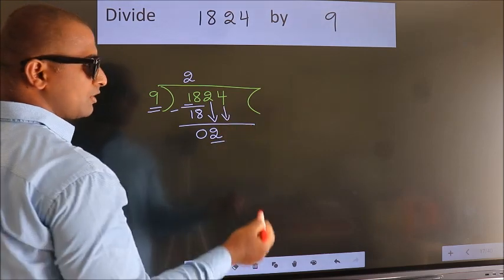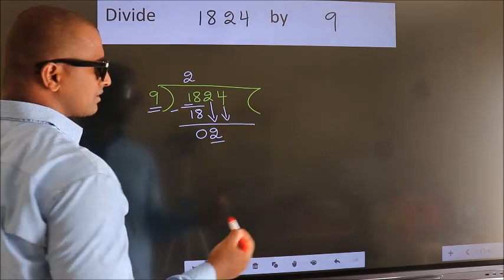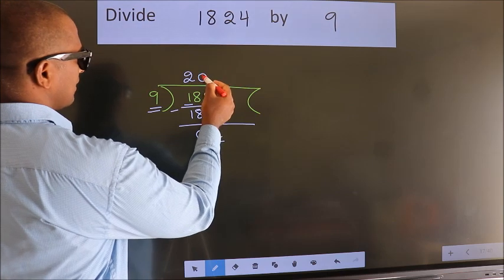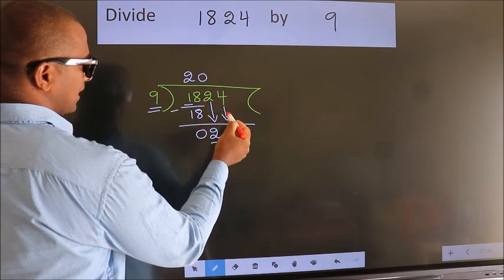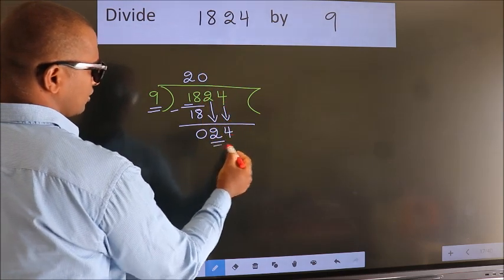So we should bring down the second number. The rule to bring down the second number is put 0 here. Then only we can bring down this number. So 24.